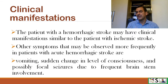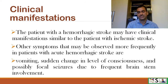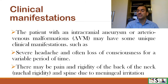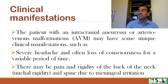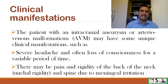The patient with hemorrhagic stroke may have clinical manifestations similar to those of ischemic stroke. Additional symptoms observed more frequently in acute hemorrhagic stroke are vomiting, sudden change in the level of consciousness, and possibly focal seizures due to frequent brain stem involvement. Patients with intracranial aneurysms and arteriovenous malformations may present with severe headache, loss of consciousness for a variable period, and pain and rigidity in the back and neck — nuchal rigidity — and in the spine, due to meningeal irritation.